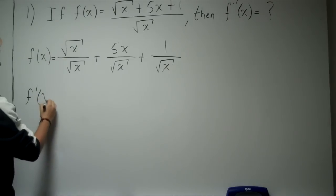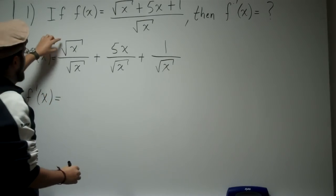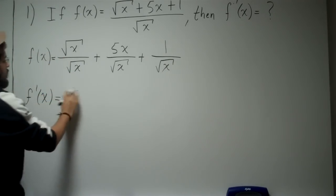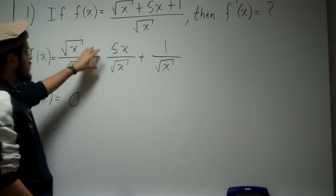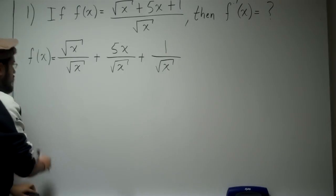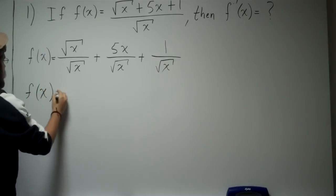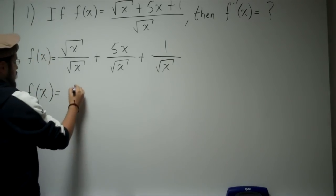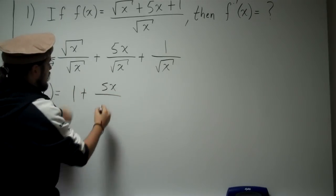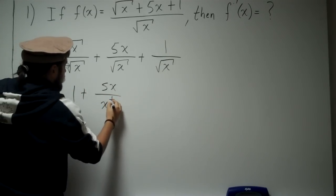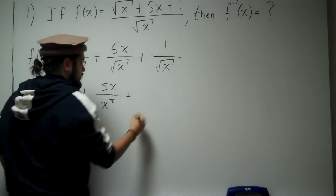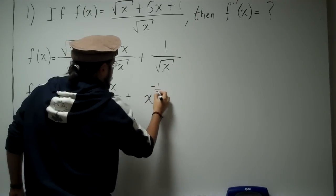So now we have f prime of x. The square root of x divided by the square root of x is just 1, so the derivative of 1 is 0. For the next term, 5x over square root of x — the square root of x can also be denoted as x to the 1 half. And the last term, x to the 1 half in the denominator can be brought to the top as x to the negative 1 half.